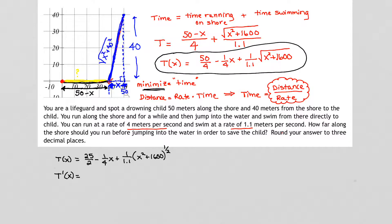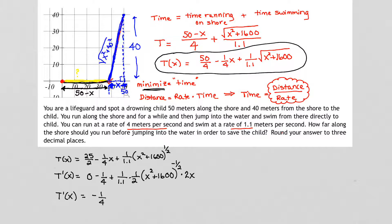The derivative of T with respect to X: the derivative of 25 halves is 0, minus one-fourth, plus one over 1.1 times one-half — applying the chain rule, since we have a function inside a function. The half comes down to the front and raises us to the negative one-half power, then we multiply by the derivative of the inside part. The derivative of X squared plus 1,600 is 2X. After canceling the 2s, dT/dX equals negative one-fourth plus X over 1.1 times the square root of X squared plus 1,600.